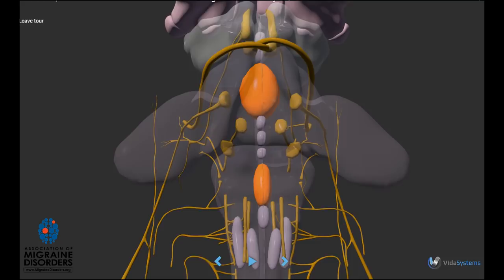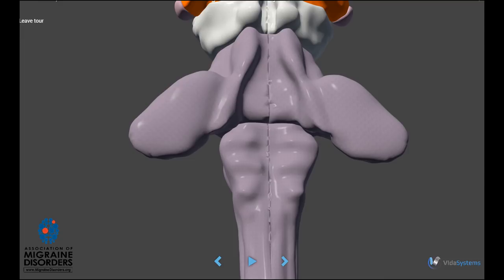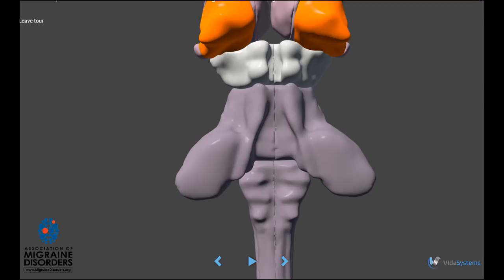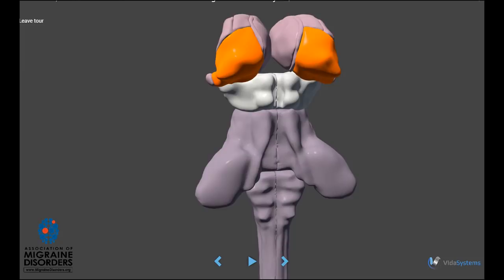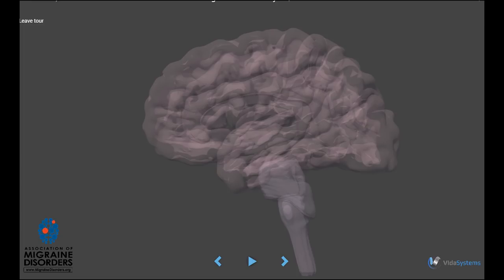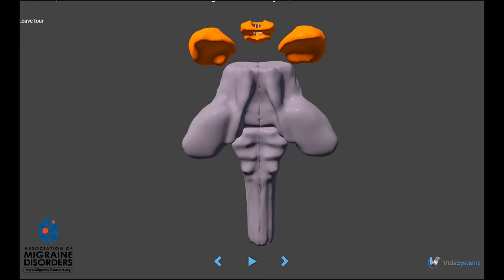The pulvinar nucleus of the thalamus synchronizes activities between the cortical areas and regulates information across the visual cortex. This could well be the area generating visual auras. The anterior cingulate cortex controls our self-perception, including a wide range of cognitive, motor, pain, and emotional functions. It is strongly linked to the brainstem, hypothalamus, amygdala, and periaqueductal gray, as well as the autonomic motor nuclei.